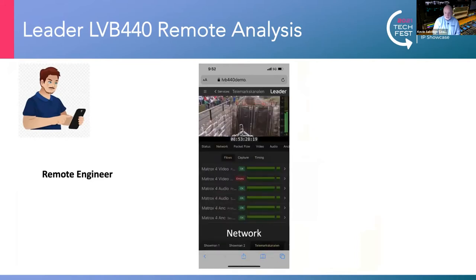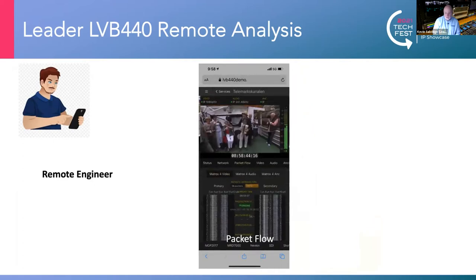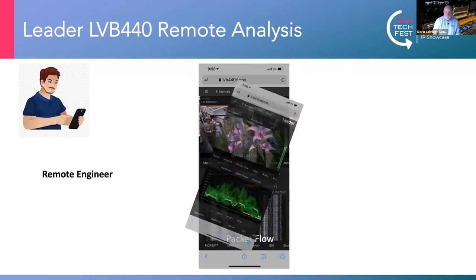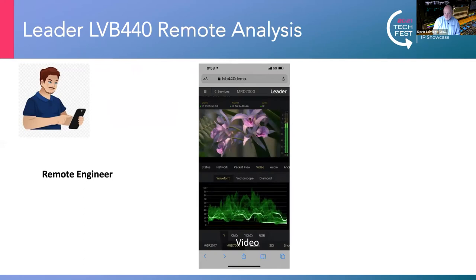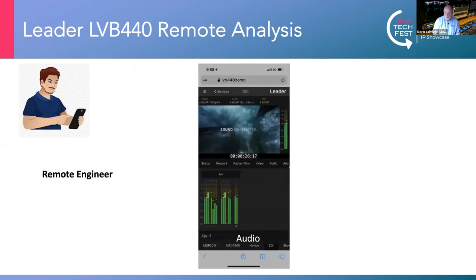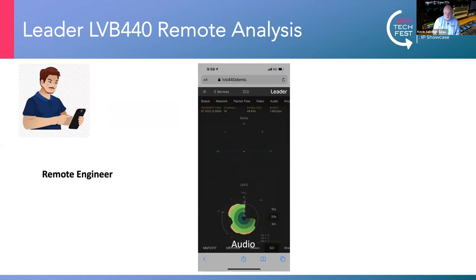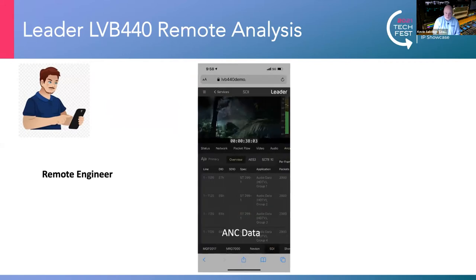Here we're monitoring the status, now we're looking at the network and the flows. Here we can see the 2022-7 streams, exactly as we saw before — the secondary is 100% of the data flows at the moment. The waveform monitor for the video picture, the audio — this is where the down mix of 7.1 and 5.1 to a stereo pair can be invaluable for checking and listening to the audio on a particular service. Audio loudness is capable remotely, and the monitoring of ancillary data as well.